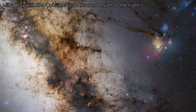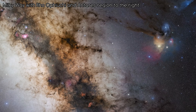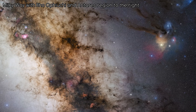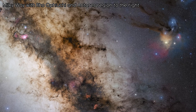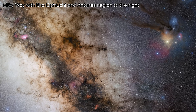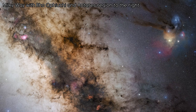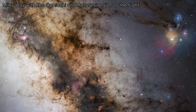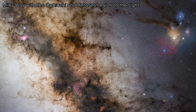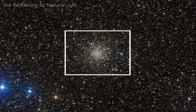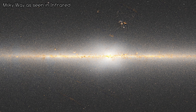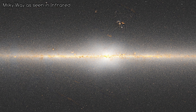The interstellar medium, particularly dust, has a very real effect on us too. Over vast distances, the dust in the interstellar medium acts like a fog, either blocking the view of stars thousands of light years away in the visible spectrum of light, or giving stars a reddish appearance. If there wasn't an interstellar medium between the stars, you would be able to see the entire disk of the Milky Way in the night sky.